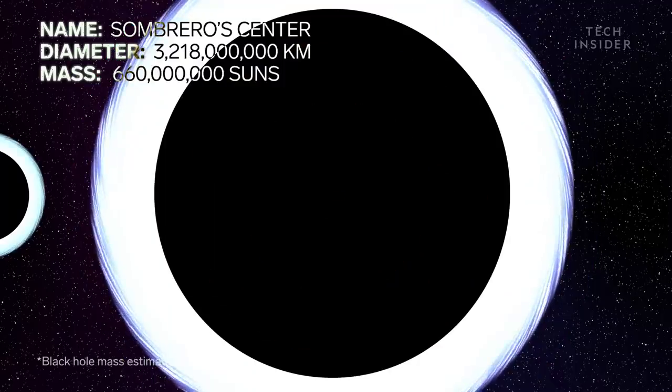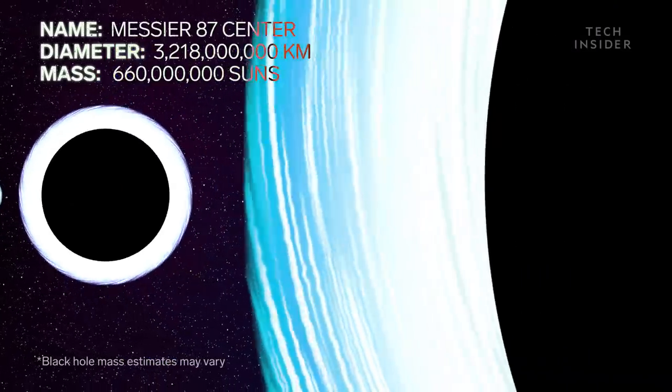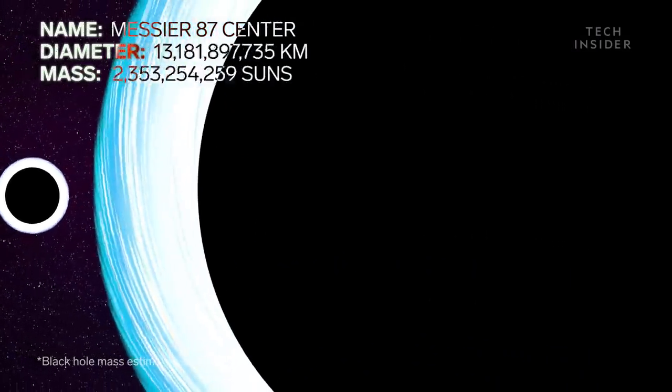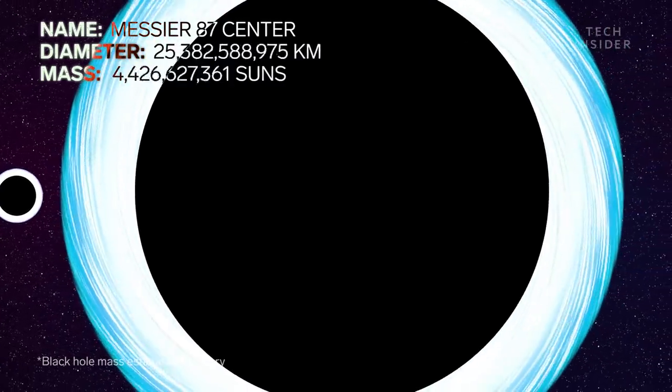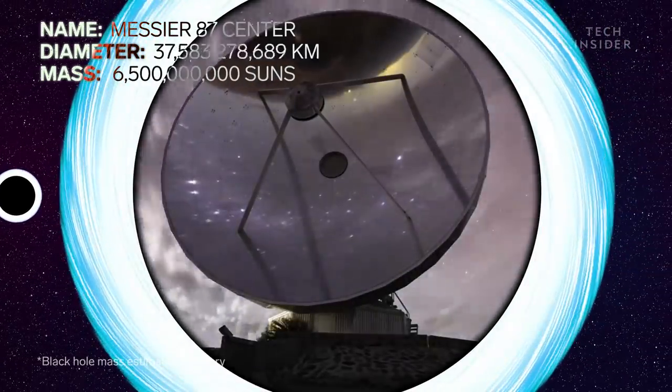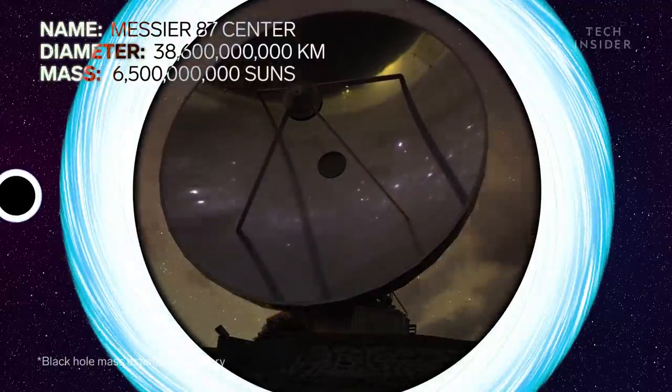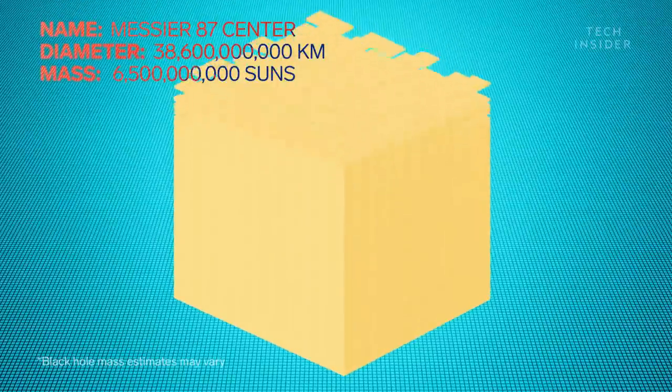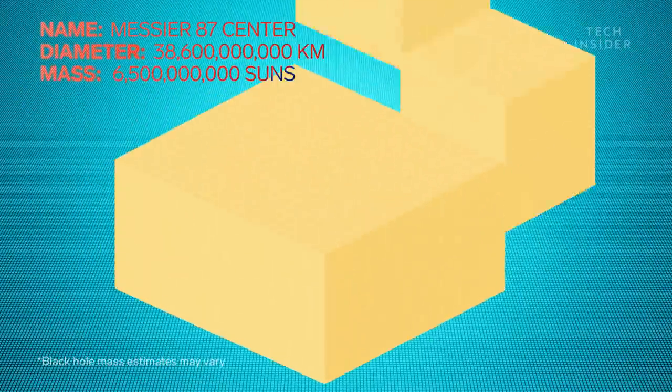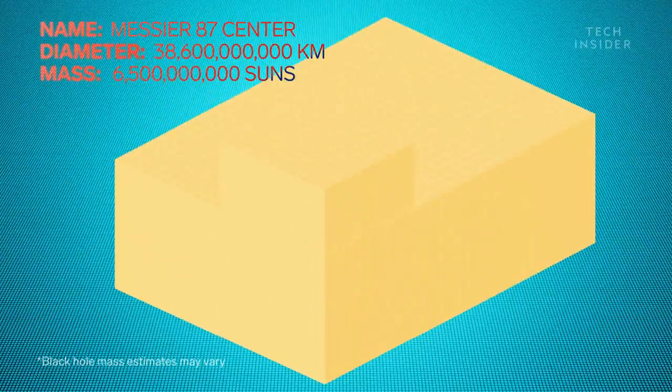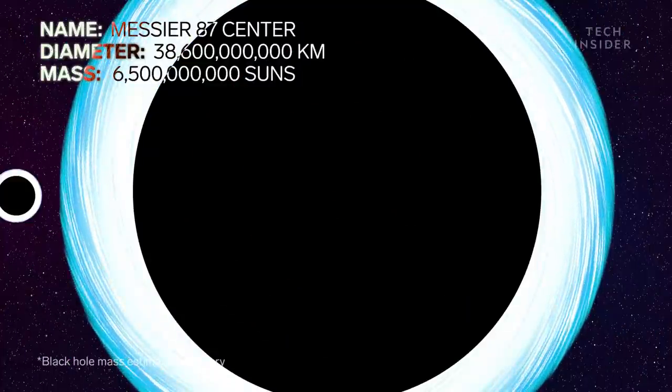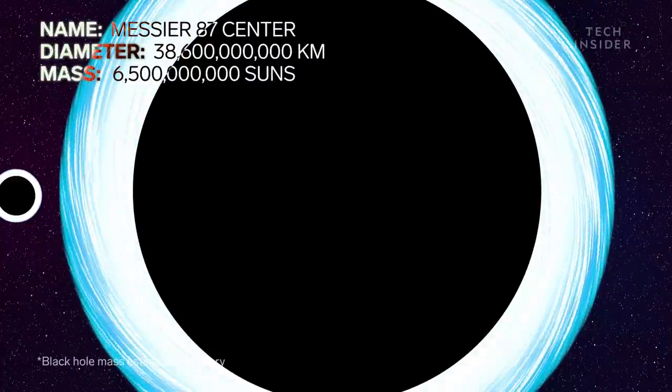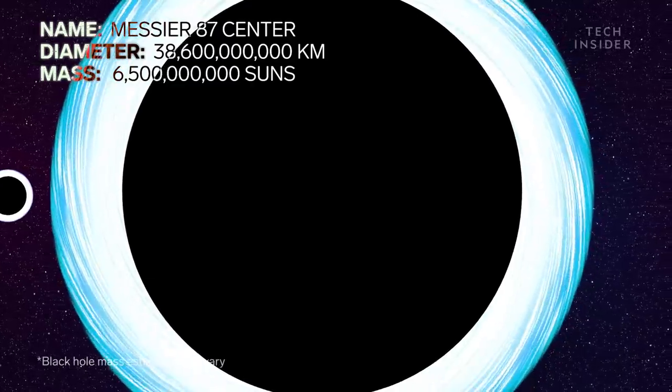And the supermassive black hole at the center of Messier 87 is so huge that astronomers could see it from 55 million light years away. It's 24 billion miles across and contains the same mass as 6.5 billion suns. But this supermassive black hole, as large as it is, could still fit within our solar system, with plenty of room to spare.